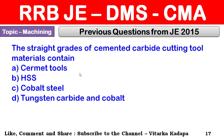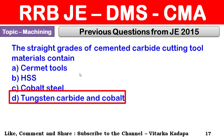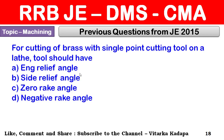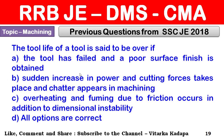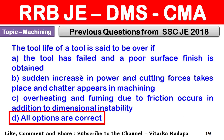Crater wear is predominant in tungsten carbide tools. The straight grade of cemented carbide cutting tool material contains tungsten carbide and cobalt. For cutting of brass with a single point cutting tool on a lathe, the tool should have zero rake angle. The tool life is said to be over if the tool has failed, poor surface finish is obtained, sudden increase in power and cutting forces occurs with chatter, or overheating and fuming due to friction occurs along with dimensional instability — so all three options are correct.